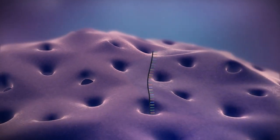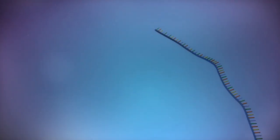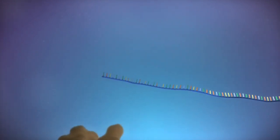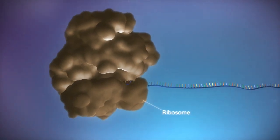The messenger RNA then moves out of the nucleus into the cytoplasm. Protein factories in the cytoplasm, called ribosomes, bind to the messenger RNA.